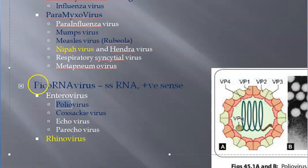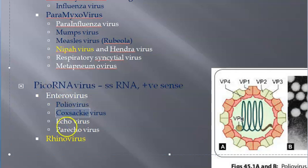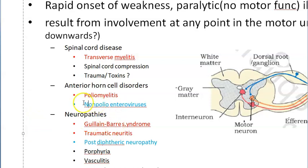Under enteroviruses, non-polio enteroviruses include coxsackievirus and others. These non-polio enteroviruses can also cause acute flaccid paralysis. Now, moving on from the anterior horn cells to the nerve — we are now looking at neuropathies.